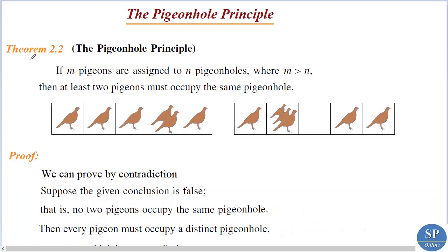Theorem 2.2: the pigeonhole principle. The statement is: if m pigeons are assigned to n pigeonholes where m is greater than n, then at least two pigeons must occupy the same pigeonhole.